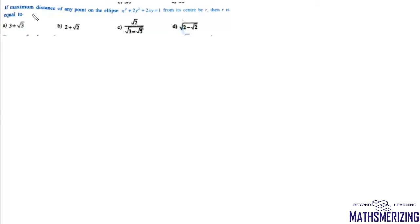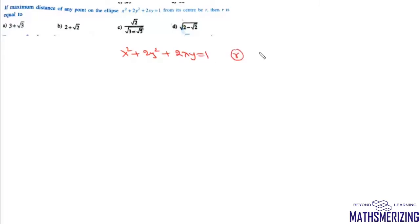The question is: if the maximum distance of any point on the ellipse x² + 2y² + 2xy = 1 from its center is r, then r is equal to?